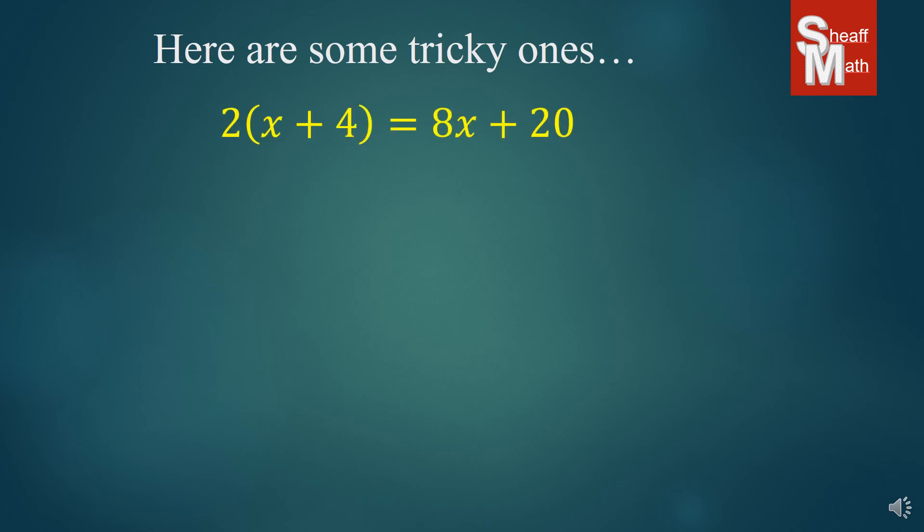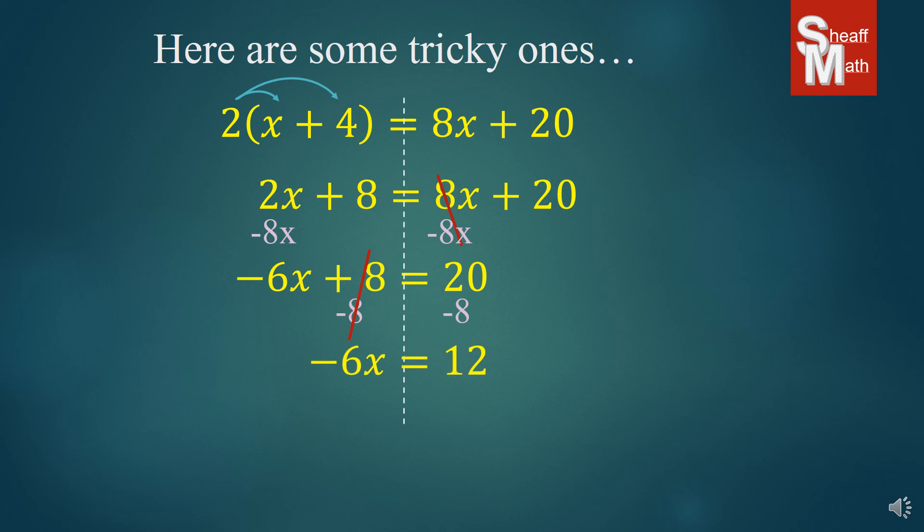All right, this one has a parentheses in it and so we're going to have to do a distributive property before we can attack the problem. So we're going to distribute that 2 to both of those numbers in the parentheses and so it'll be 2 times x and 2 times 4, which is 2x plus 8 equals 8x plus 20. And so here we go again, we're back at the starting point and so we subtract 8x on both sides leaving us negative 6x plus 8 equals 20. We subtract 8 on both sides, canceling those out, left with negative 6x equals 12. We divide by negative 6 and we get x equals negative 2. There it is.